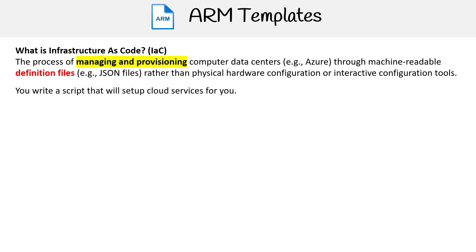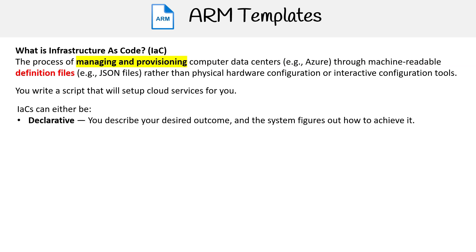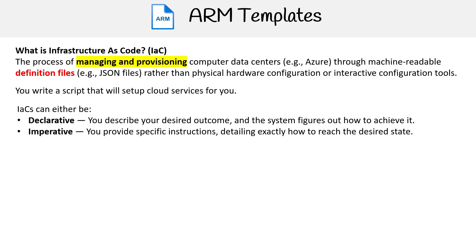You write a script that will set up cloud services for you. There are two main approaches to IaC. Declarative — here you describe your desired outcome and the system figures out how to achieve it. Imperative — here you provide specific instructions detailing exactly how to reach the desired state.